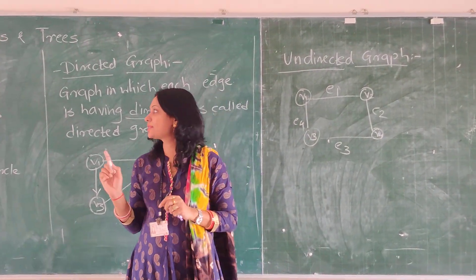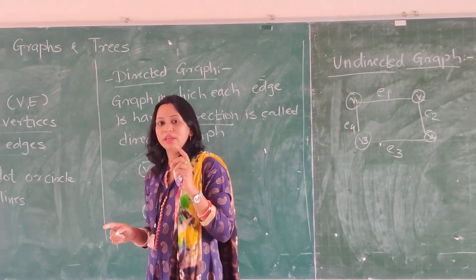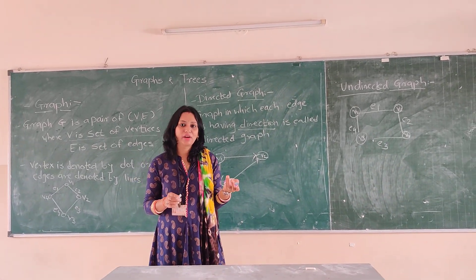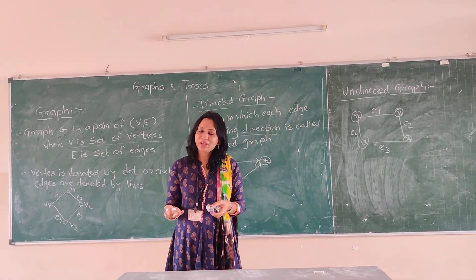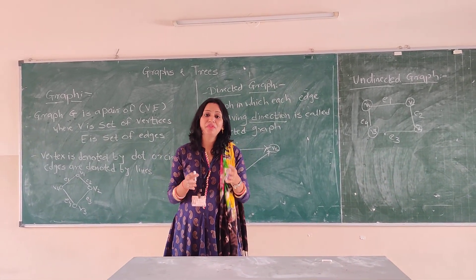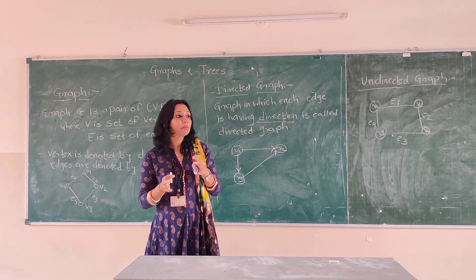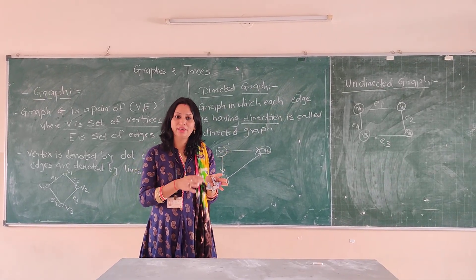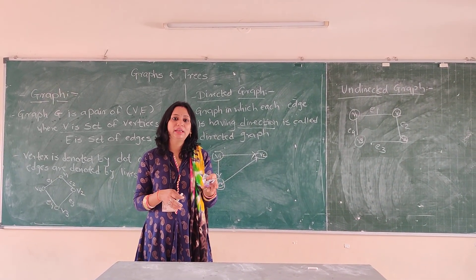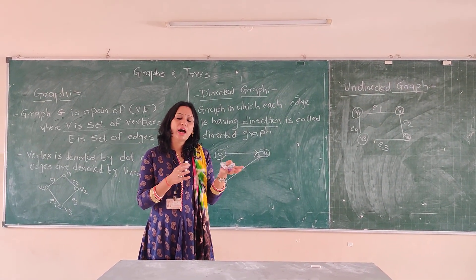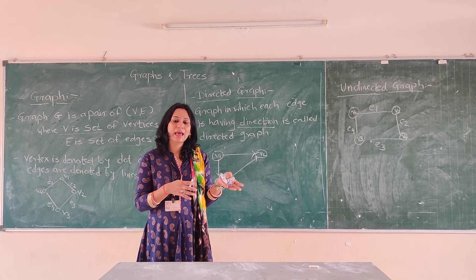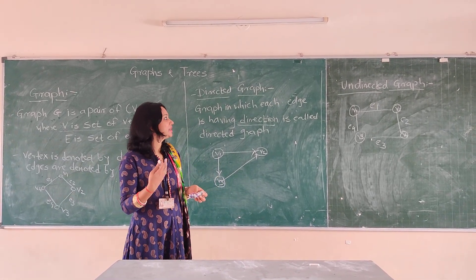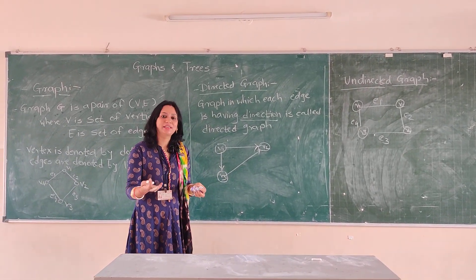So this is all about graph, directed graph, and undirected graph. In our next section we will see the basic properties related to graphs — like what the degree is, how edges can be parallel, and so on. We will cover that in our next section. Thank you.